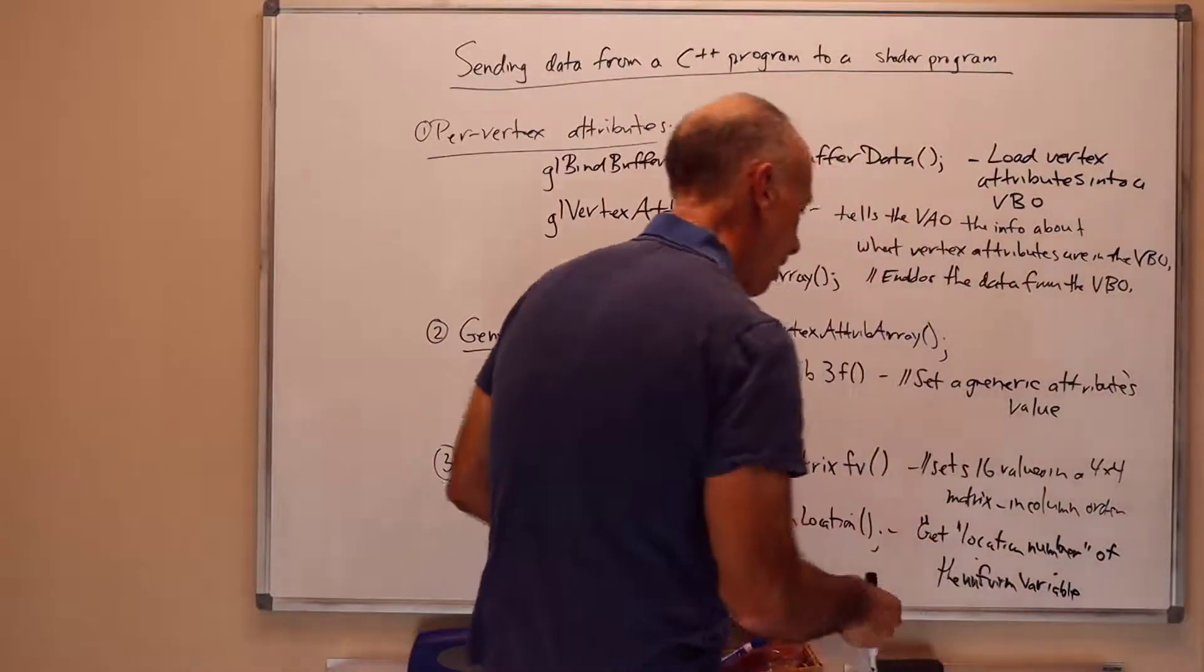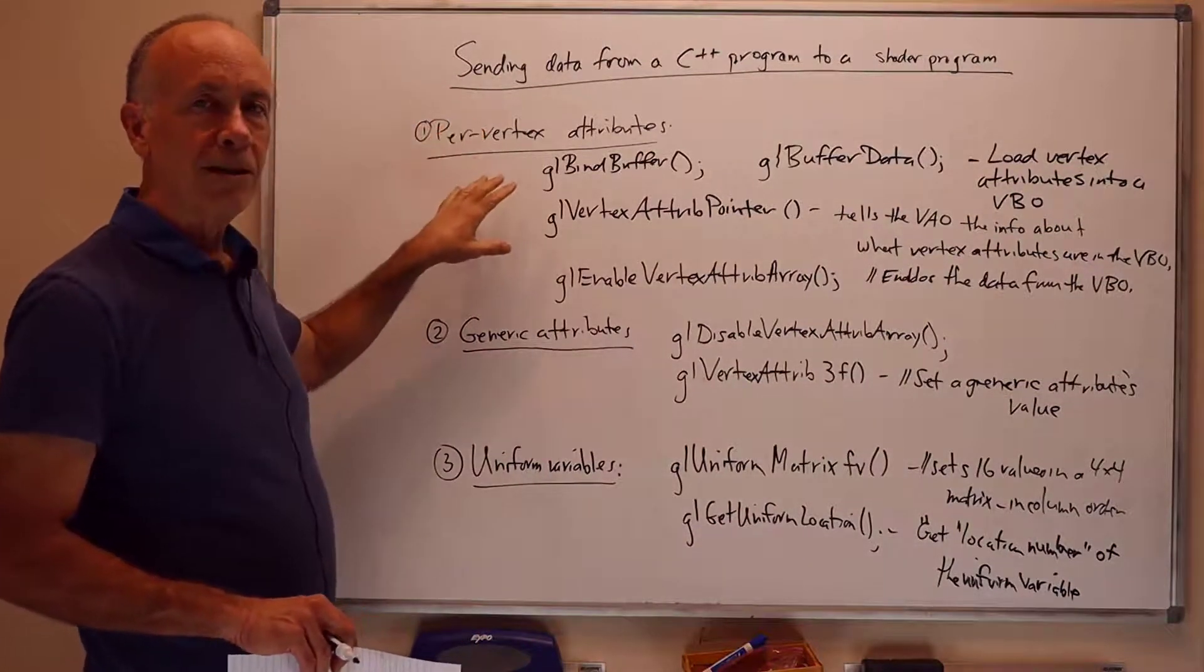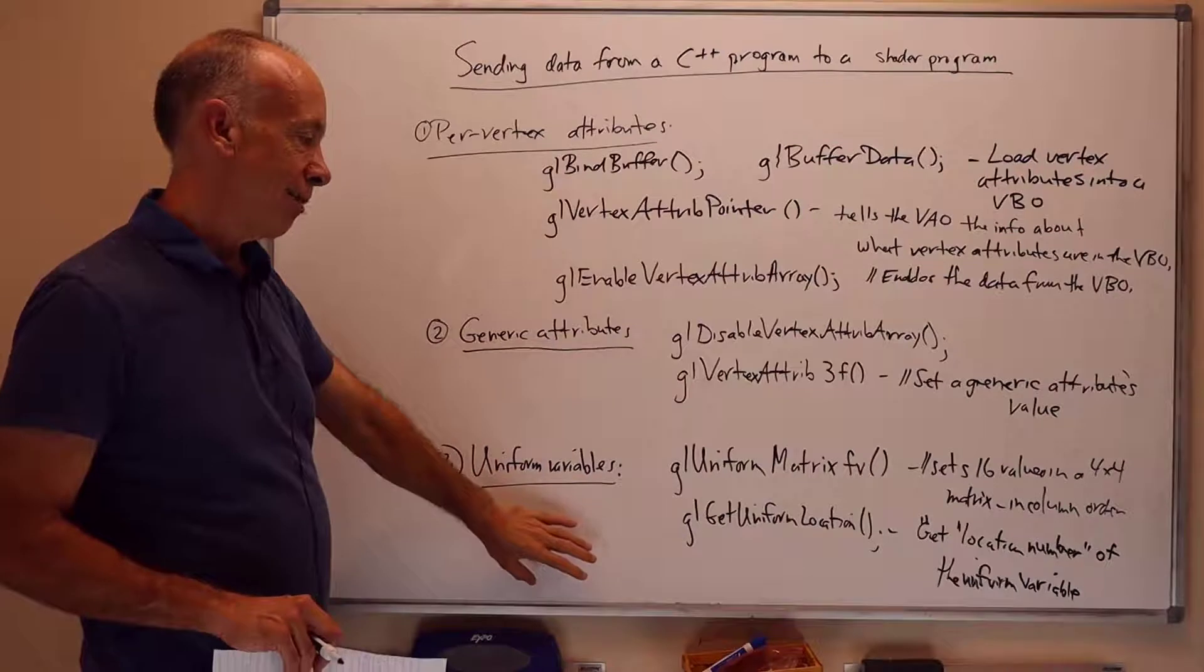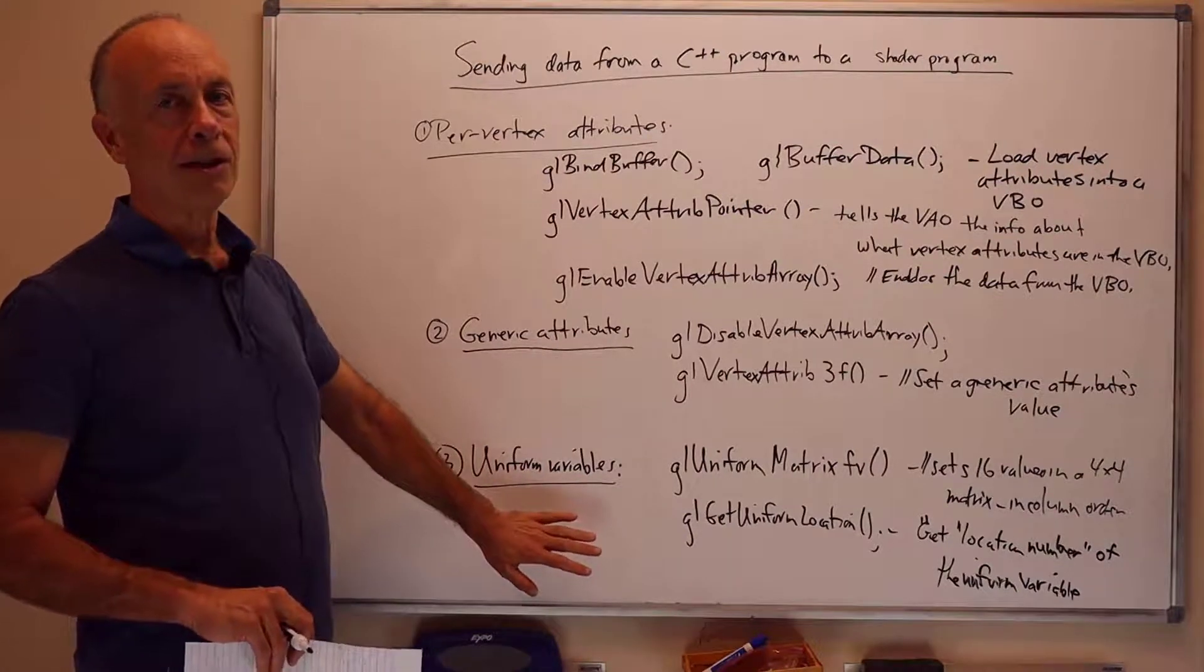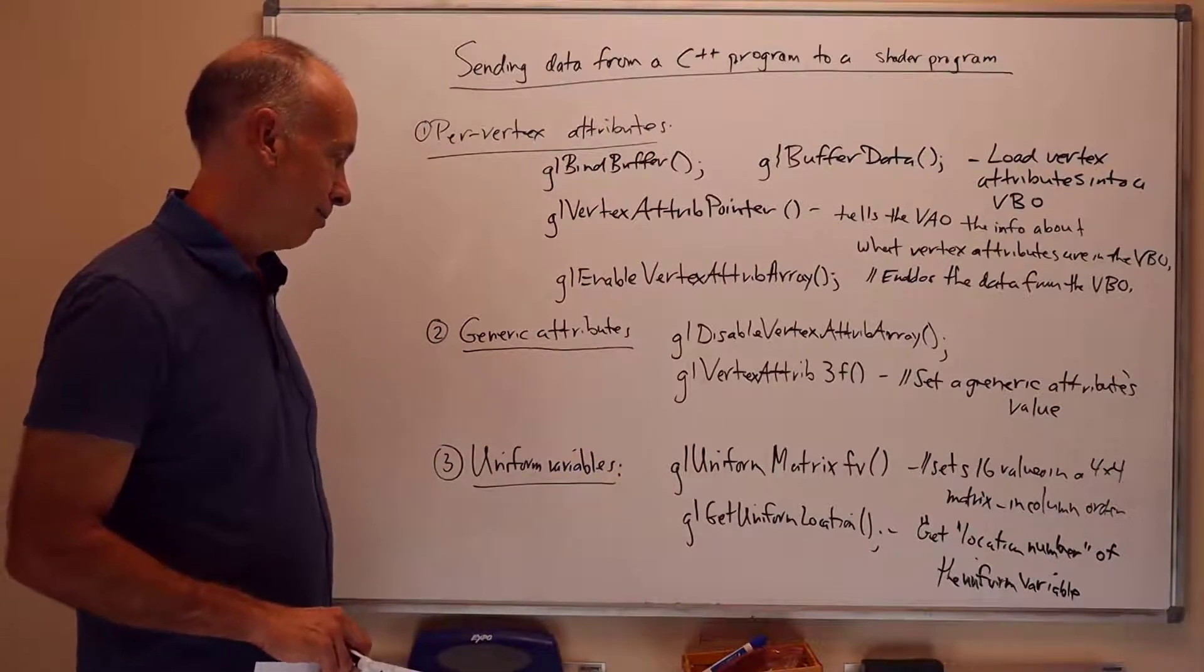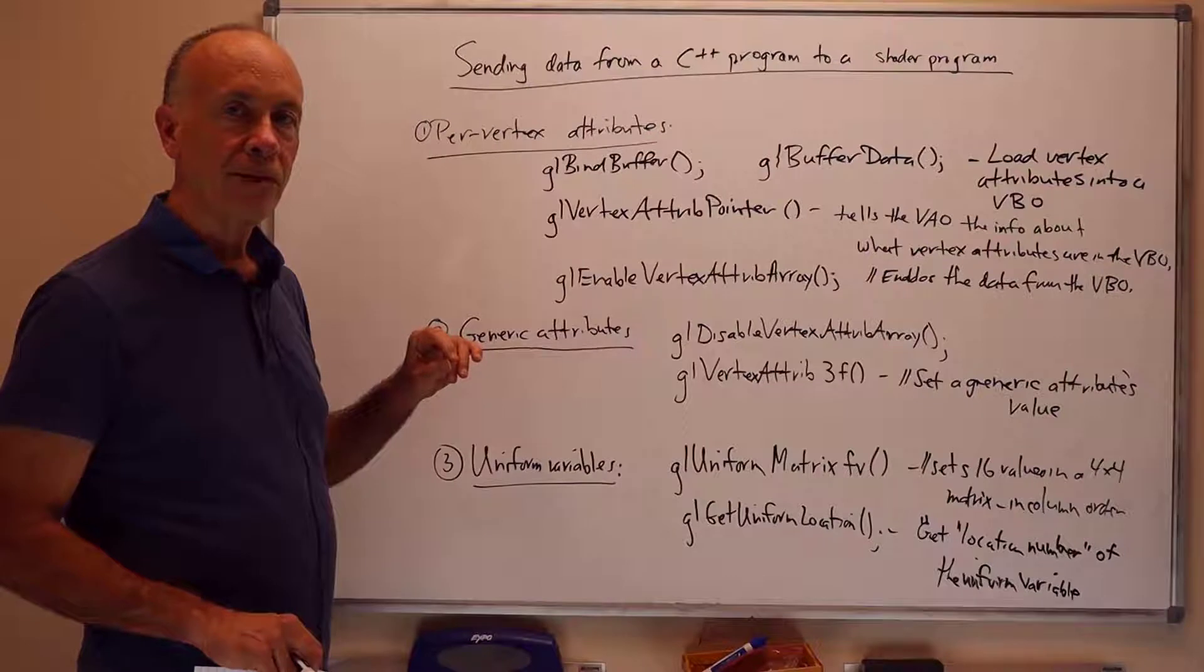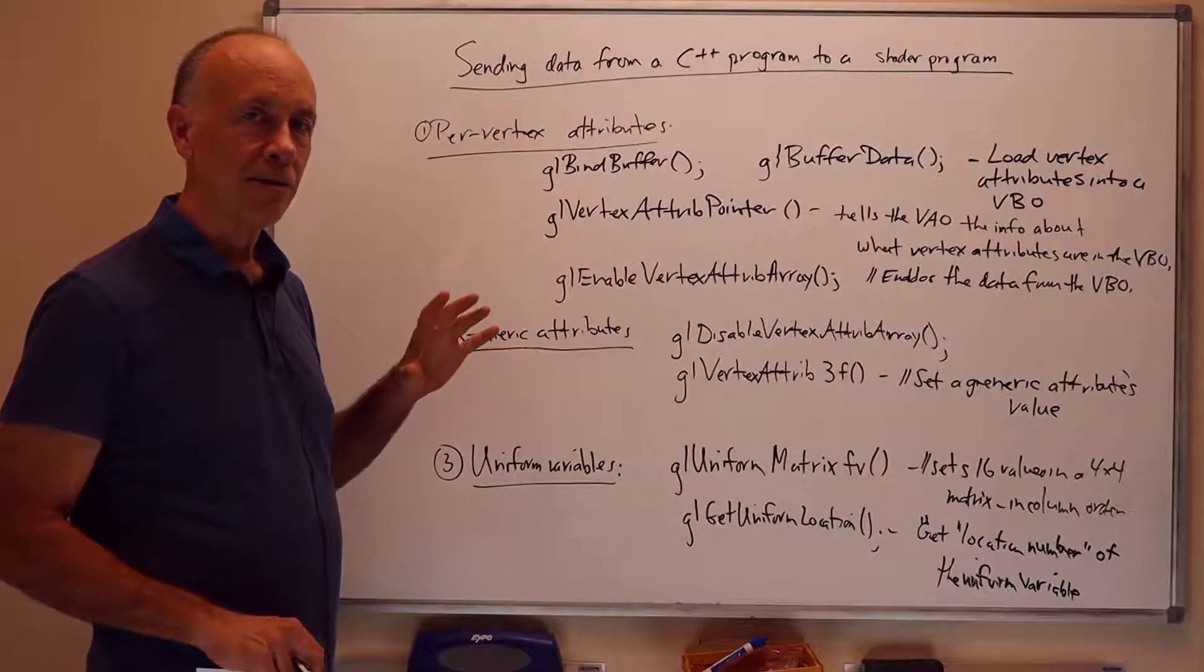Vertex attributes have location numbers as well, that's a different set of location numbers. And the location number is how the vertex shader links to the values from the C++ program. Uniform variables have a dynamically allocated location number, at least in the most commonly used versions of OpenGL. And so we actually have to get it each time we run the program, because it could be different every time we run the program. But these are the relevant commands. I'm going to now switch to the computer, and show you briefly how these things are used in a functioning C++ OpenGL program.